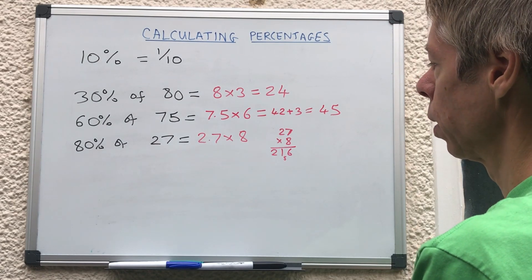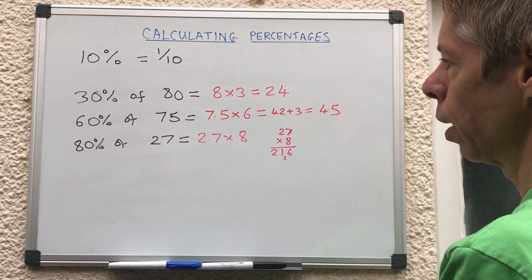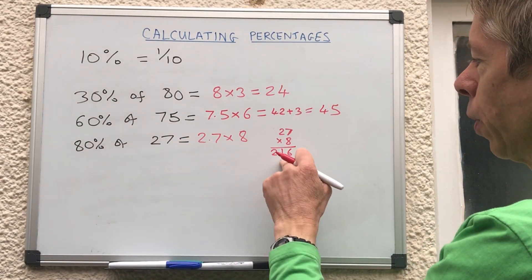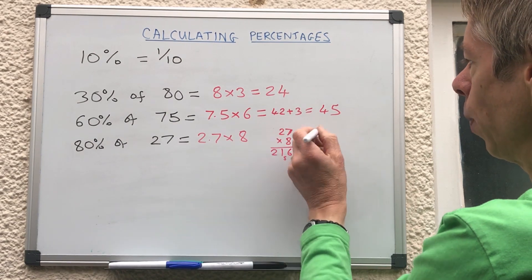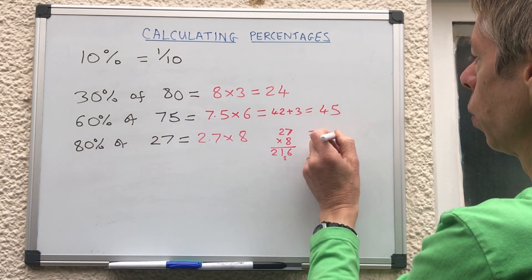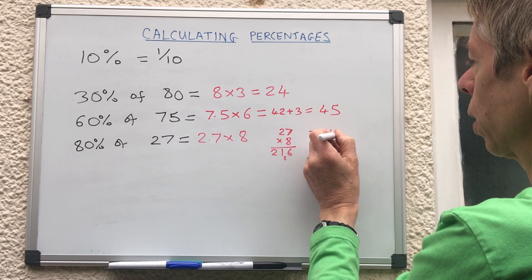So we get 216. So what would that be? We had 27 so it can't be 216, can't be 2, so it must be 21.6.